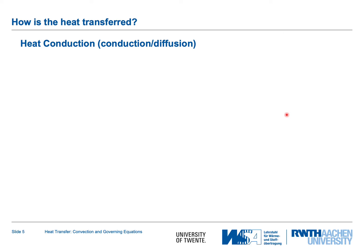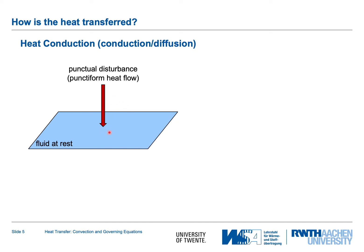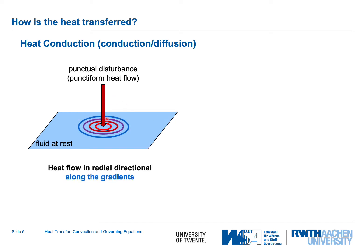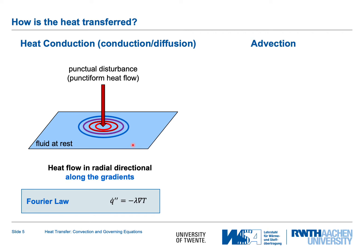On a very local scale, if we aim a heat source at a fluid at rest, heat is transported radially away from the source along temperature gradients. Fourier's law states that the heat flux per unit surface area equals the thermal conductivity times the temperature gradient. Now suppose we only have transport by a moving fluid — with no local molecular interaction. That is called advection.